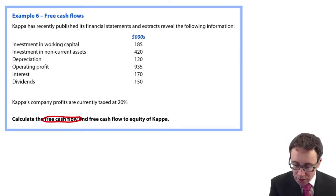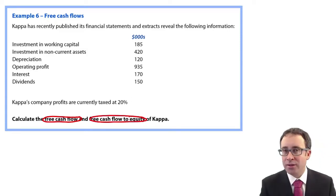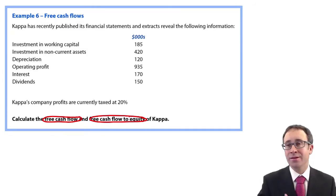And then we wanted to work out the free cash flow to equity, whereby we start with the free cash flow and then we deduct any interest payments, because then what is left is everything available to the equity holders.